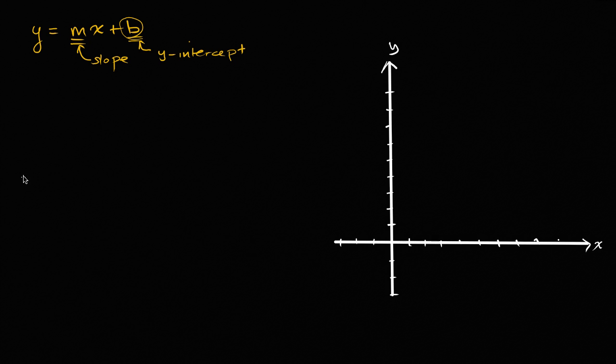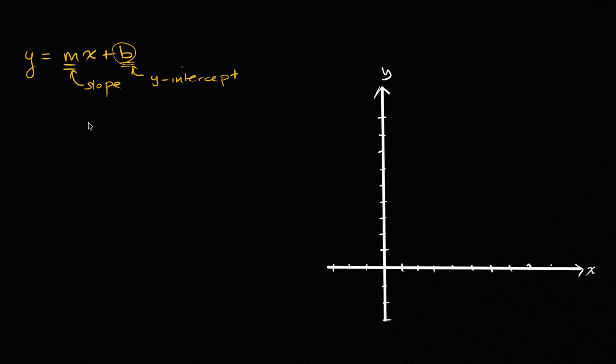We've also seen that you can express things in point-slope form. This is slope-intercept. And these are just different ways of writing the same equations. You can algebraically manipulate from one to the other. Another way is point-slope form.